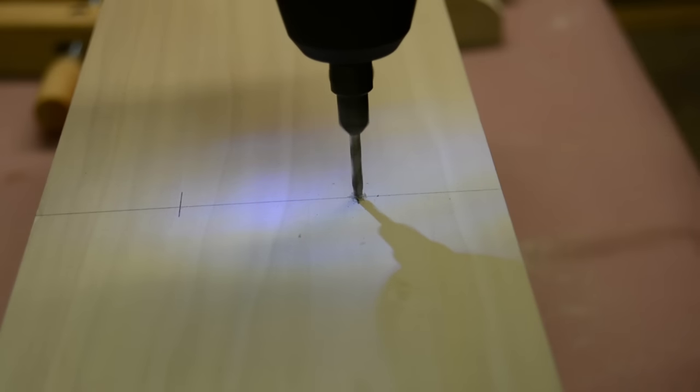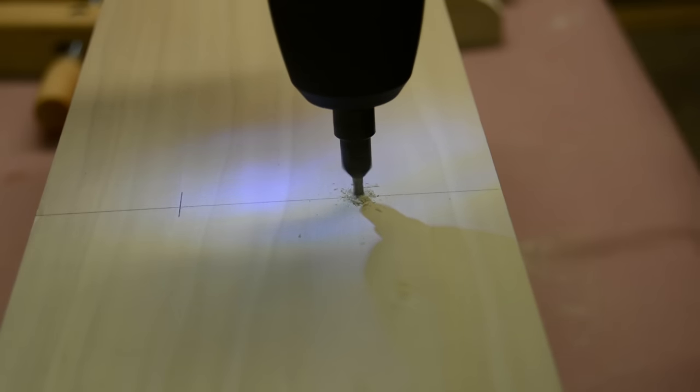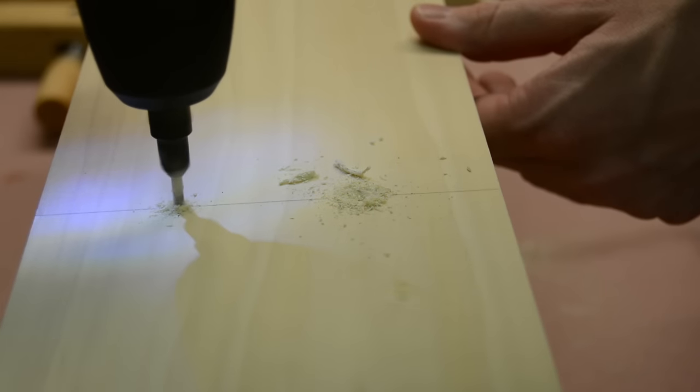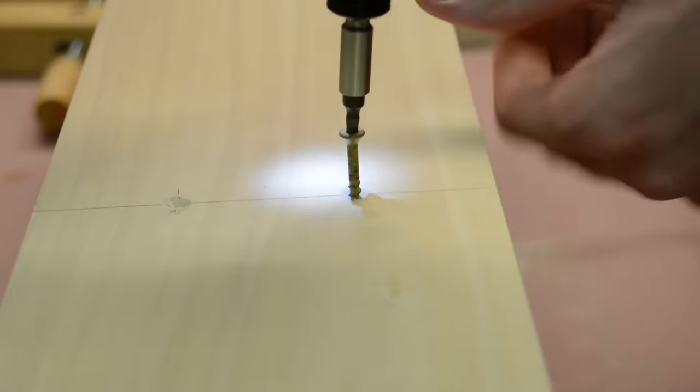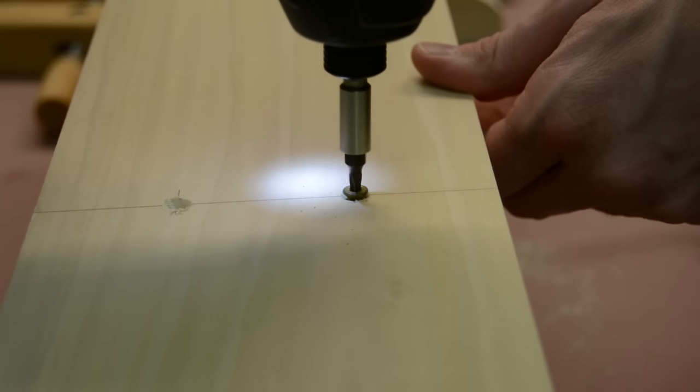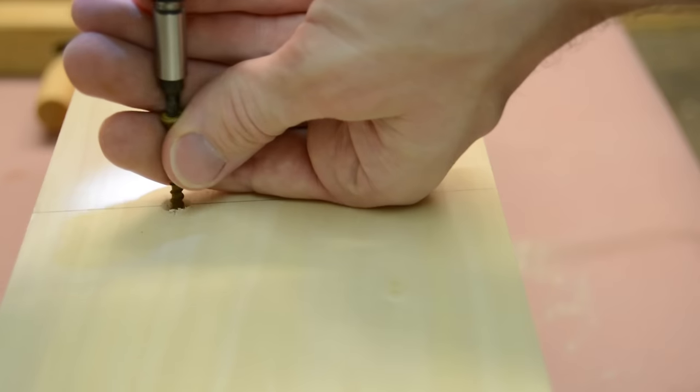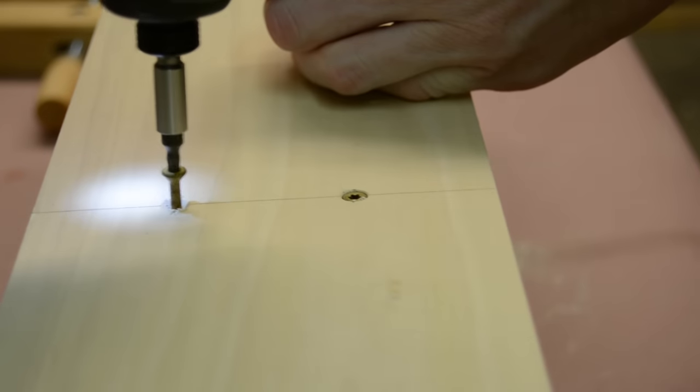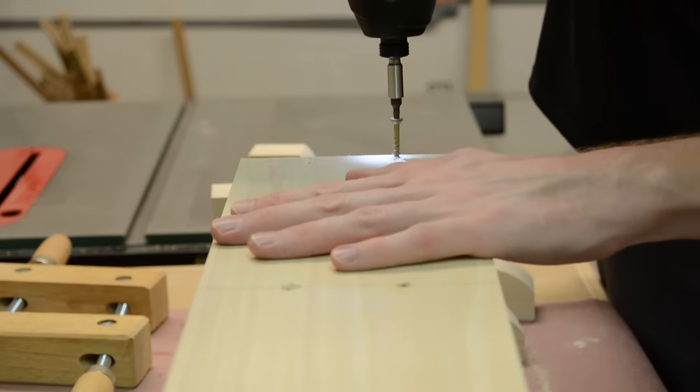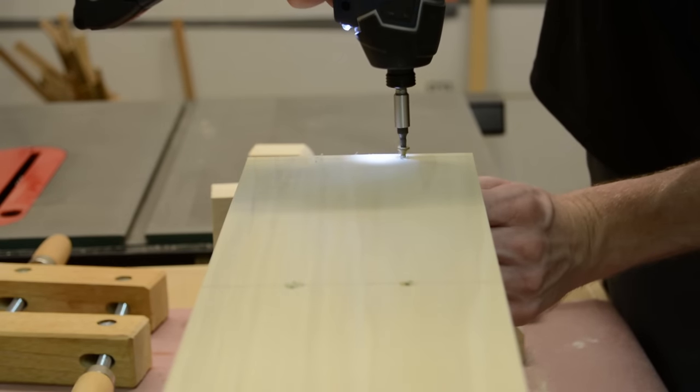Now that the glue has dried, I can go back and countersink and drive some screws to make sure that these center dividers are held in place properly. You can see that having those reference lines on the bottom makes it a lot easier to know where exactly you want to drill these countersinks so that you know that you're drilling right into the center of each divider.